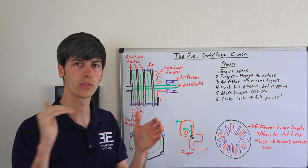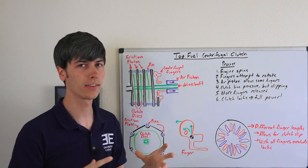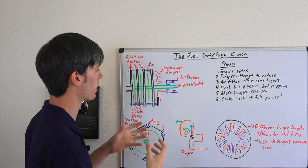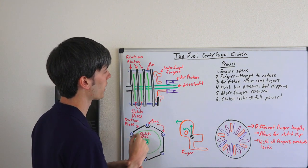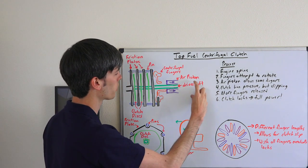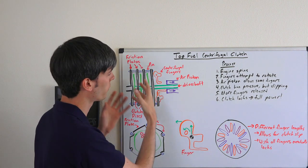As the car is going down the run, this air piston starts to move back and what that does is allow for less and less clutch slip. Initially you're going to have a lot of clutch slip with only a few fingers pressing up against it, and then this air piston starts to move back, then this finger starts to apply pressure and you have more fingers that activate.